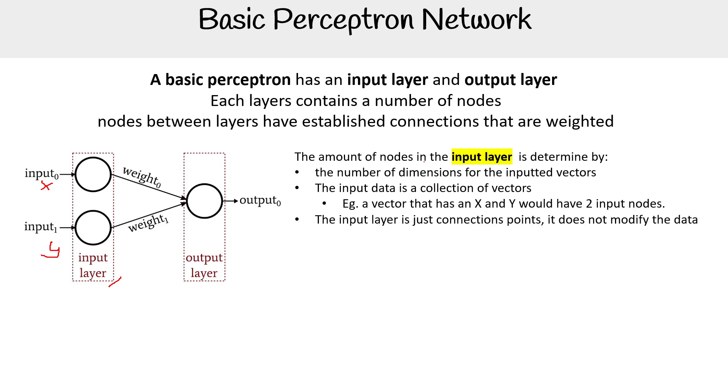So the input layer is just connection points. This input layer, nothing that this layer does will modify the data, just the starting point for it.